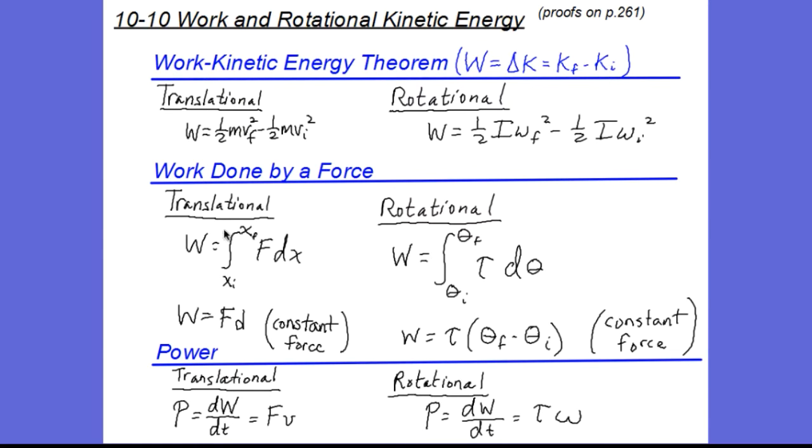We also learned that for translational motion, the work done by a force was the integral of the force times the displacement. And for a constant force, that's simplified to force times distance. Once again, we're going to replace our linear variables with rotational variables. Force is replaced by a force that produces rotation or torque. And dx is replaced with d theta, the angular displacement.